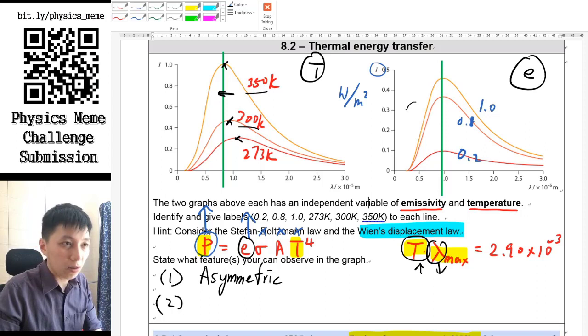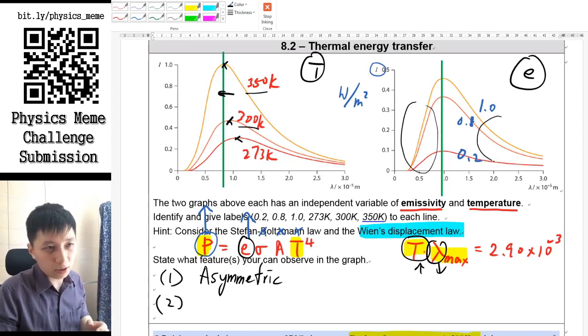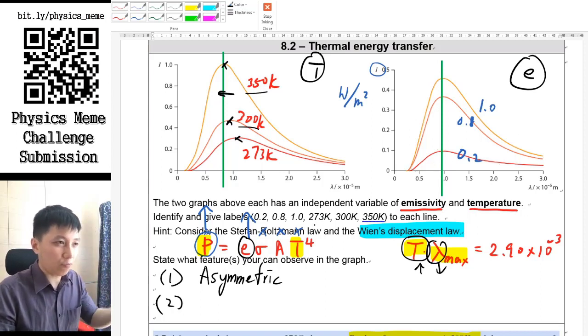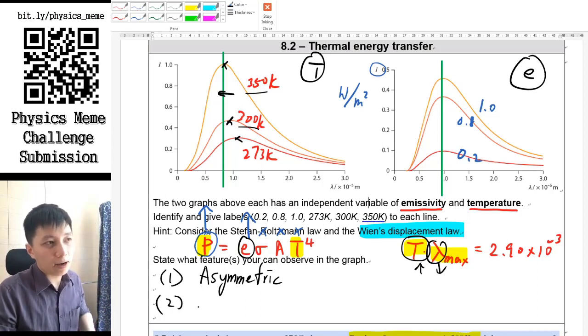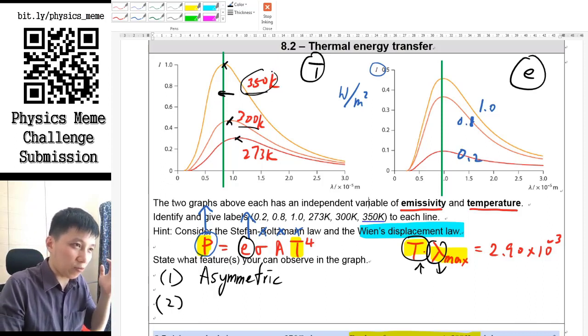For the one that we have, you can obviously see, no matter which curve you're talking about, the one on the left is going up much quicker and the one on the right is more gentle when it's decreasing, so it's asymmetric for sure.